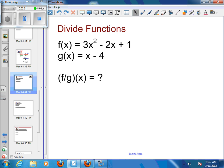Again, this would be my f of x divided by my g of x. And then I would want to fill in what my f of x is, which is 3x squared minus 2x plus 1. And then I would want to fill in what my g of x is, which is just my x minus 4.